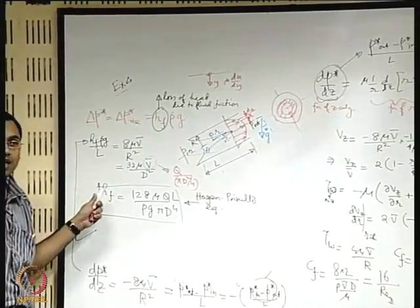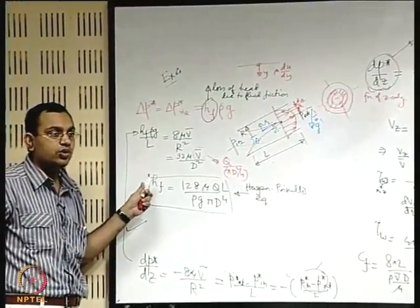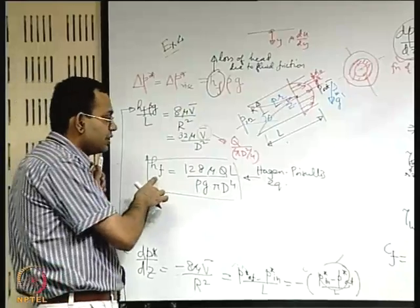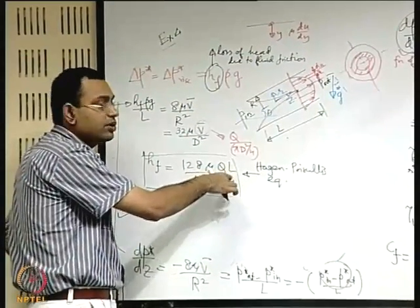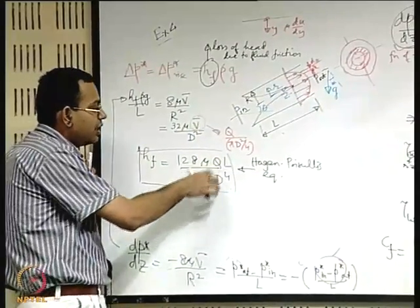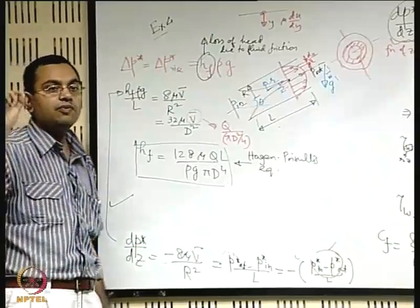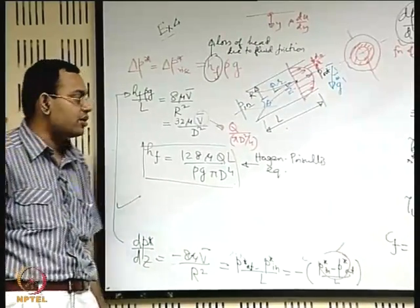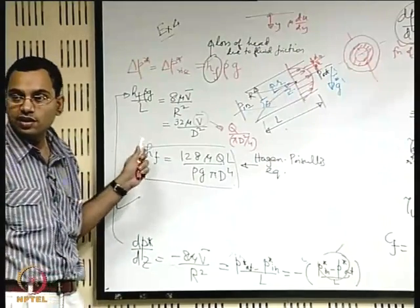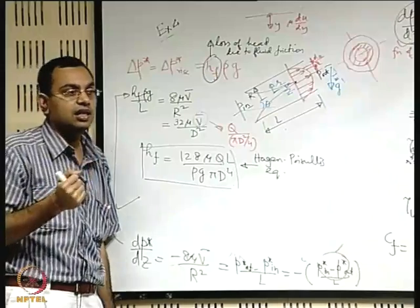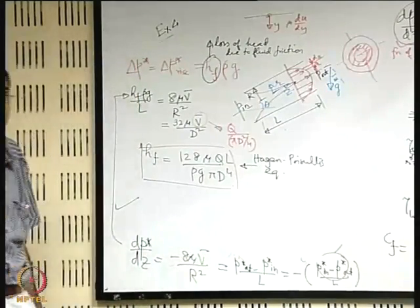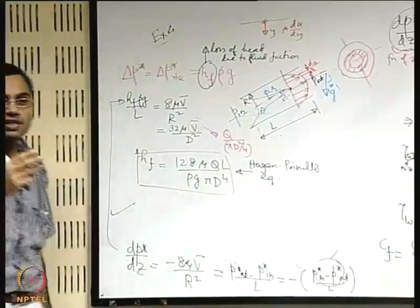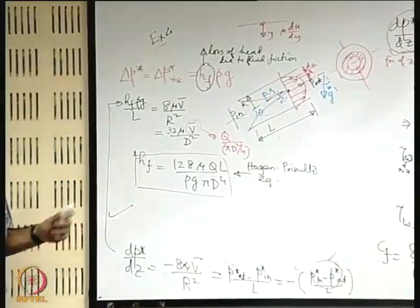The Hagen-Poiseuille equation shows that head loss is directly proportional to flow rate Q and pipe length L, and inversely proportional to the fourth power of diameter D. If the diameter is made very small (micron-scale), the head loss becomes enormous. Driving flow through a micro- or nano-channel therefore requires very large pumping power — a fundamental engineering challenge in microfluidics, rooted in basic fluid mechanics.